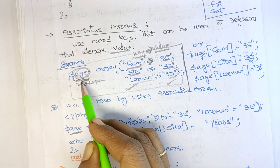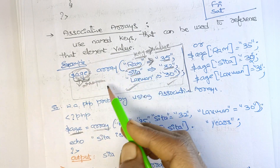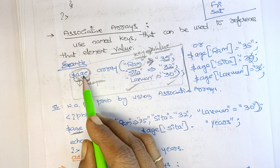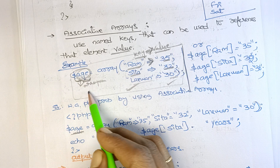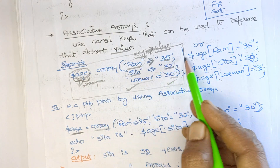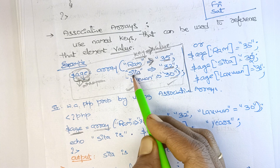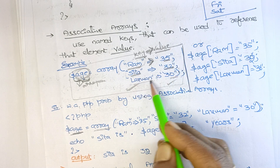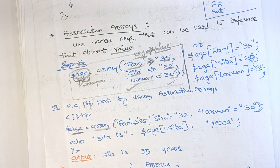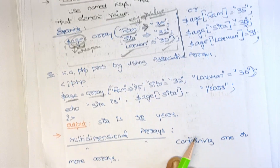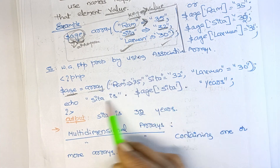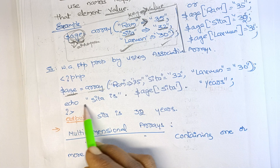For example, you could store a person's salary using an associative array. The array name would be 'salary', and you could write: Ram's salary is 50,000, Sita's salary is 70,000, Lakshman's salary is 1 lakh, and so on. You can write any program you like. After declaring the associative array, we move on to accessing the values.